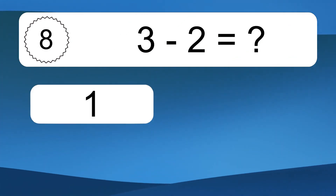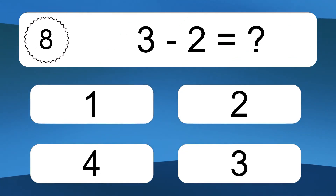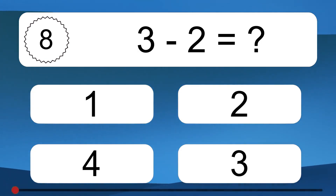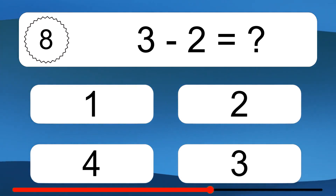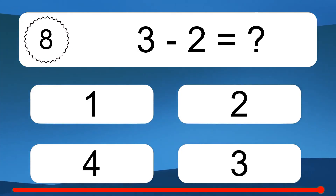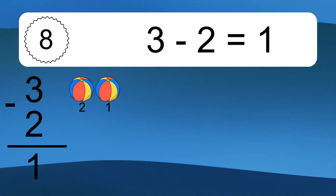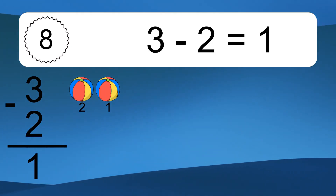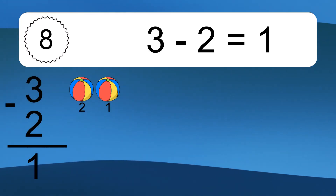3 minus 2 equals what? 3 minus 2 equals 1. Let's count it: 2, 1.